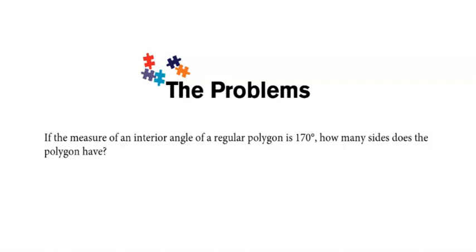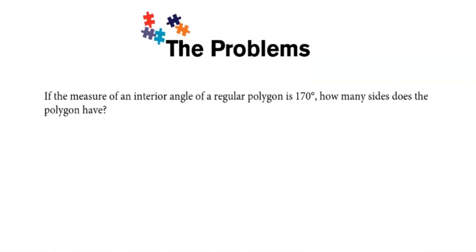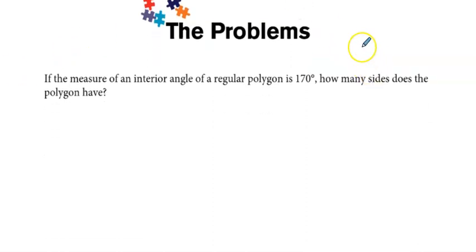Moving on to the third question. If the measure of an interior angle of a regular polygon is 170 degrees, how many sides does it have? We're going to use the same formula that we finished with on the last page, which was the 180 times n minus 2 divided by n.